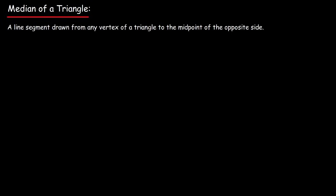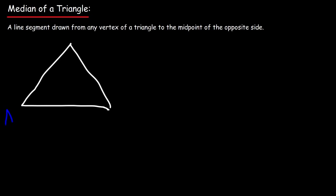In this video we're going to talk about the median of a triangle. A median is a line segment drawn from any vertex of a triangle to the midpoint of the opposite side. Let's draw triangle ABC to illustrate this. A median bisects the opposite side into two congruent parts — so point E is the midpoint of BC.